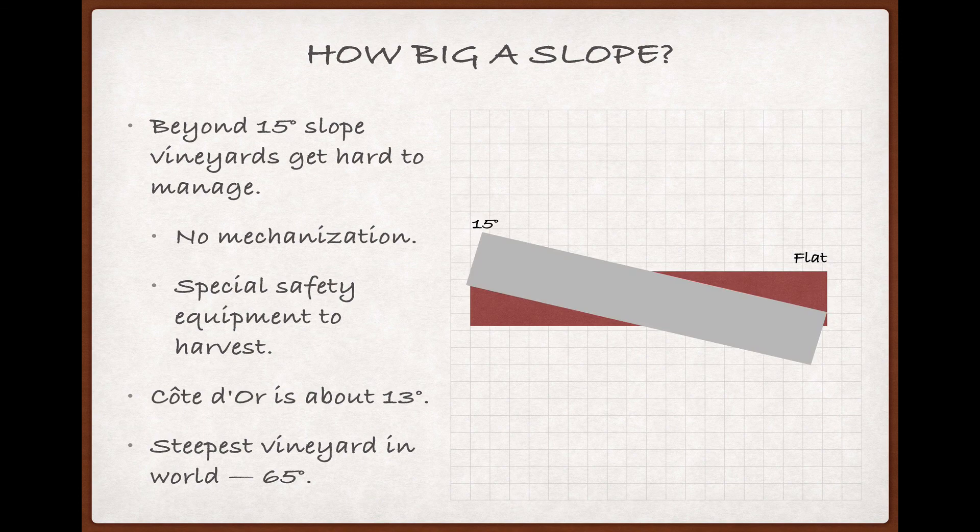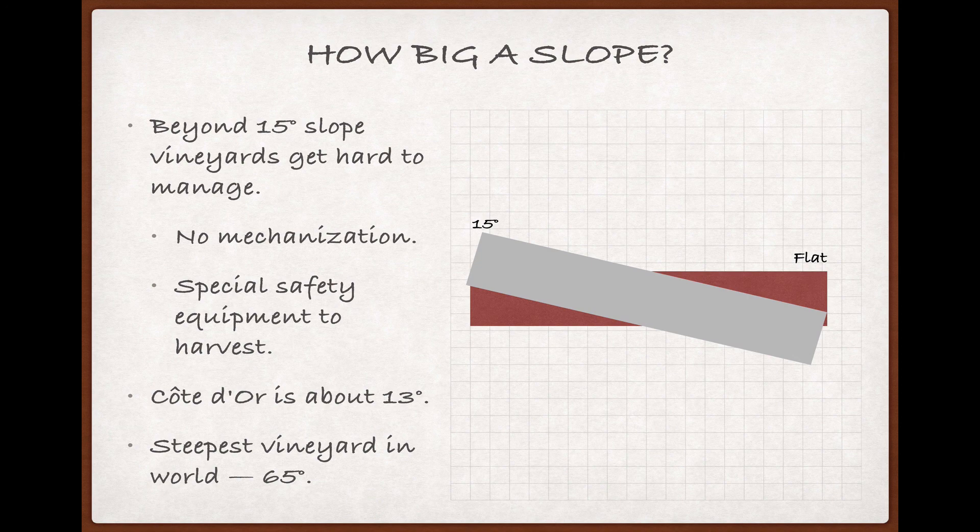And as for the world's steepest vineyard, as far as anyone can tell, that's the Calmont vineyard, far to the north, no surprise, in Germany's Mosul, with a 65-degree slope that would look something like this.